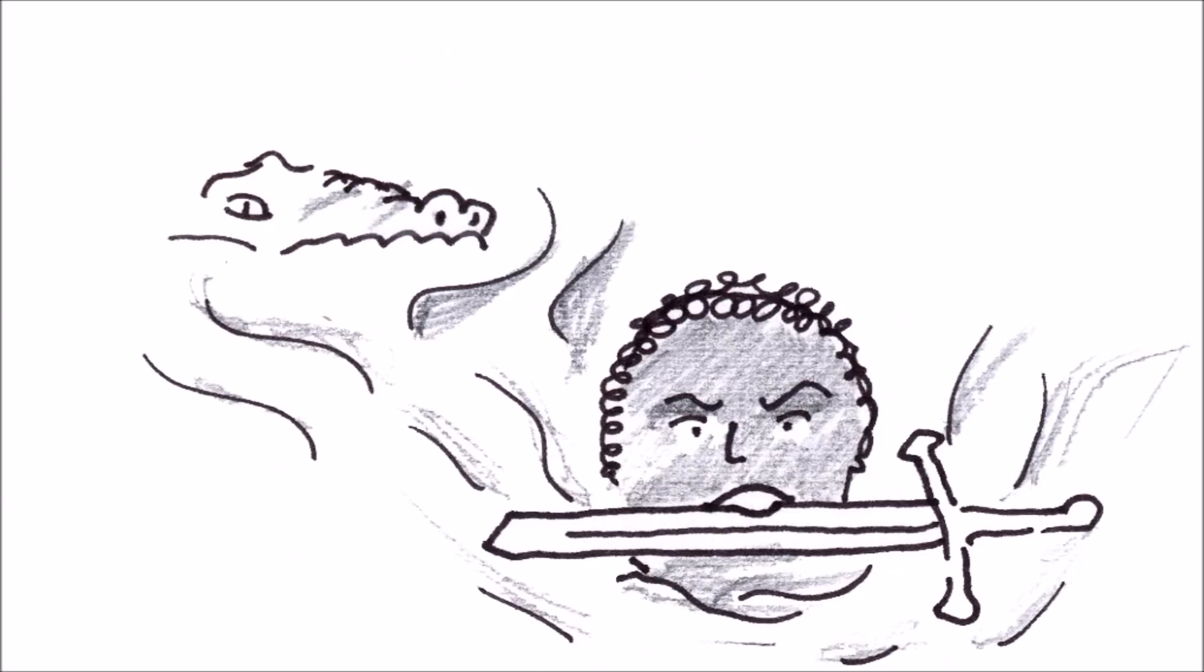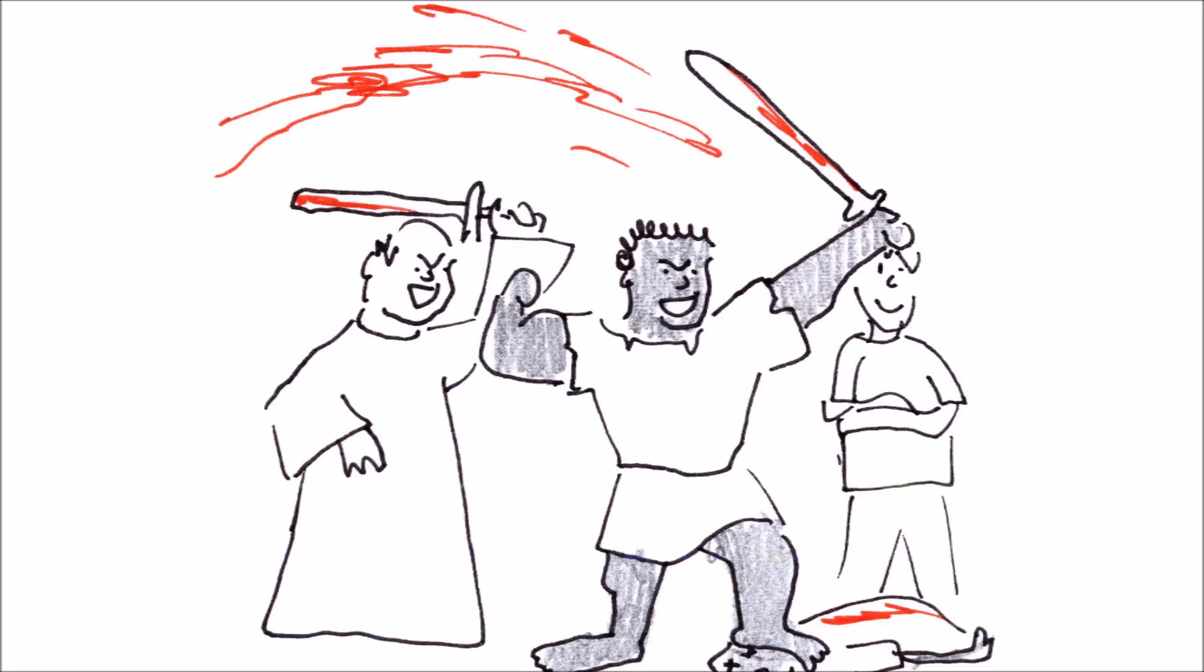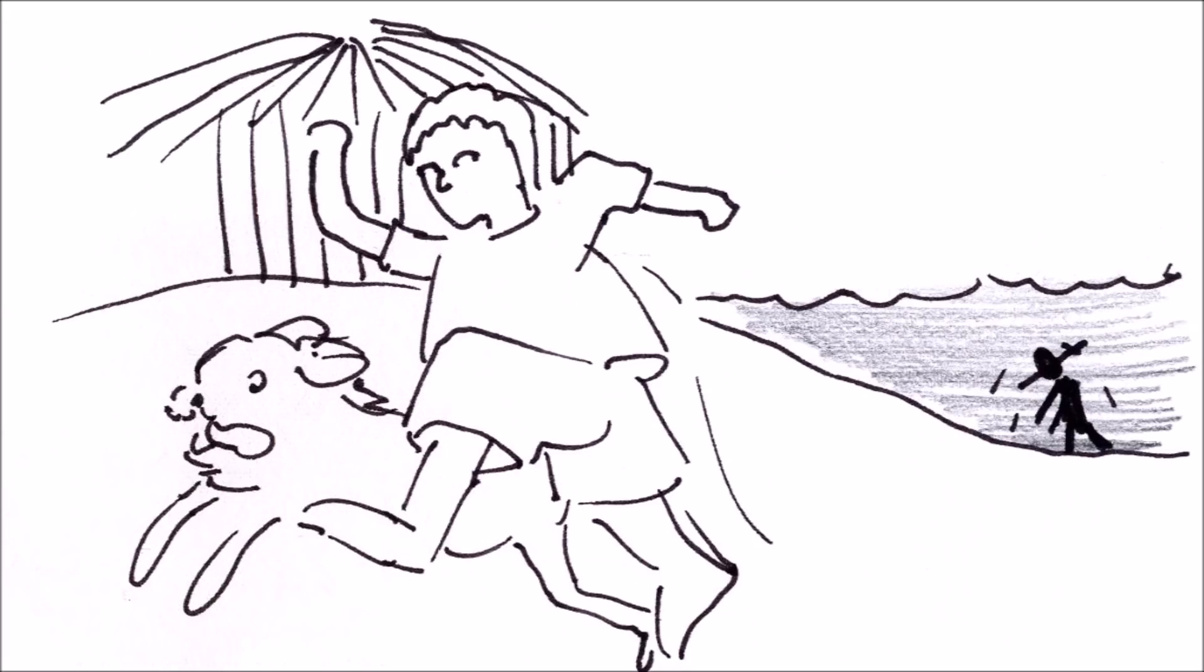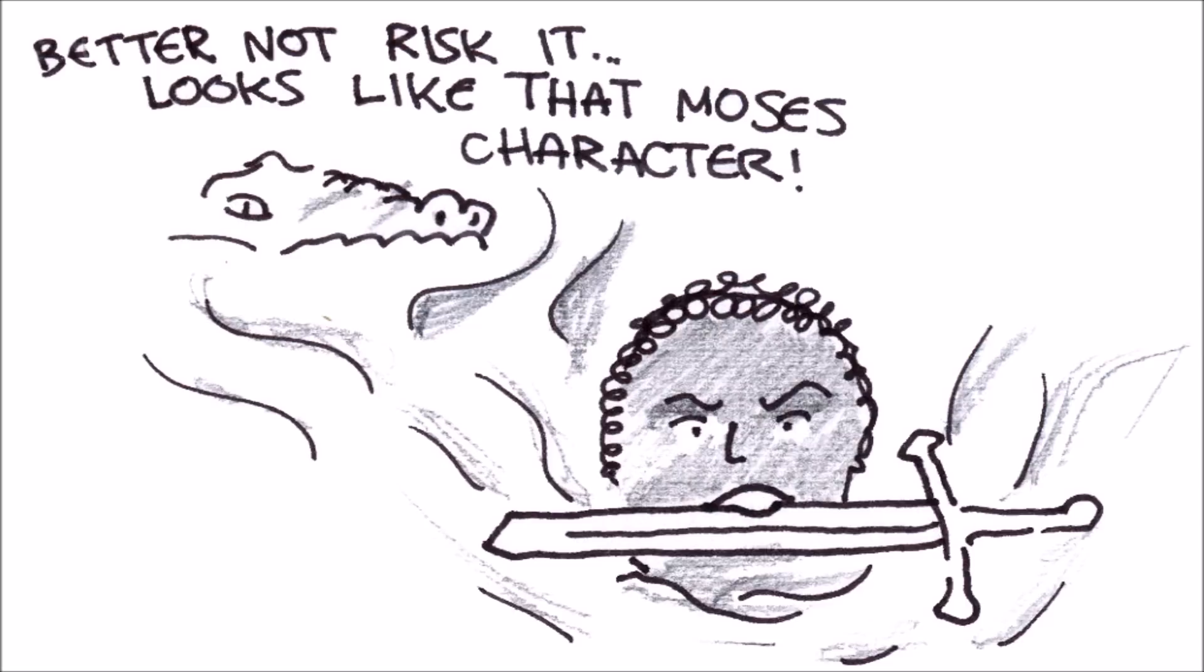He really had a temper problem. Once he swam to a hut, sword in teeth, in order to kill a dog and his owner because the dog's barking prevented his robbery. The owner and the dog managed to flee in time, so in retribution Moses took some of the owner's sheep.